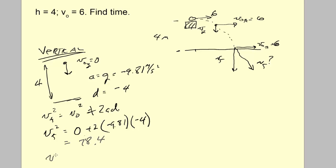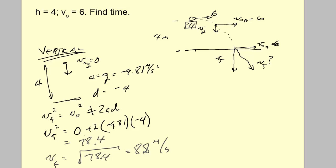VF is the square root of 78.4, which is 8.85 — about 8.9 meters per second. So even though I didn't intend to do that, we've basically figured out the vertical component of velocity when it hits the ground. Vertically, it has a speed of 8.8 m/s.